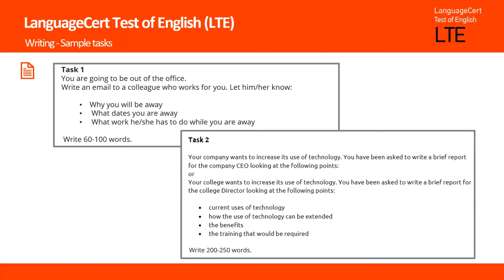They need to refer to the four points from the first option: the company's current uses of technology, how the use of technology can be extended, the benefits for the company, and the training that will be required. Candidates are asked to write between 200 and 250 words.